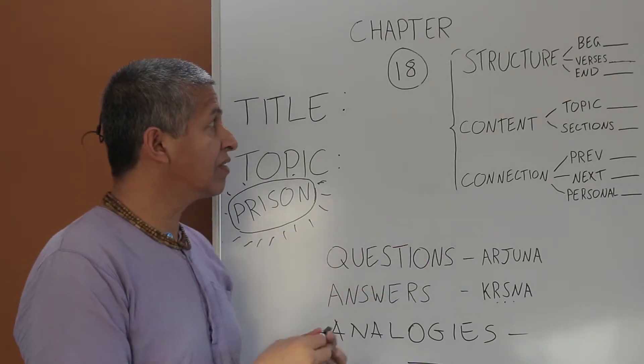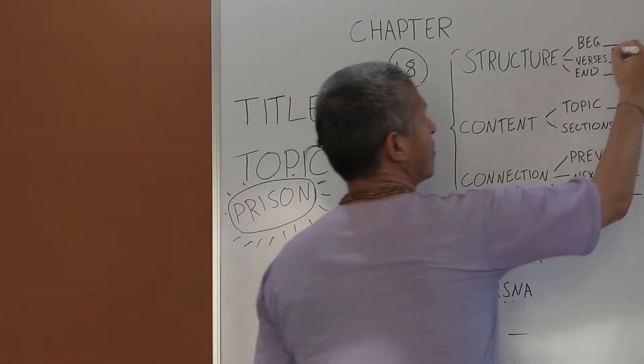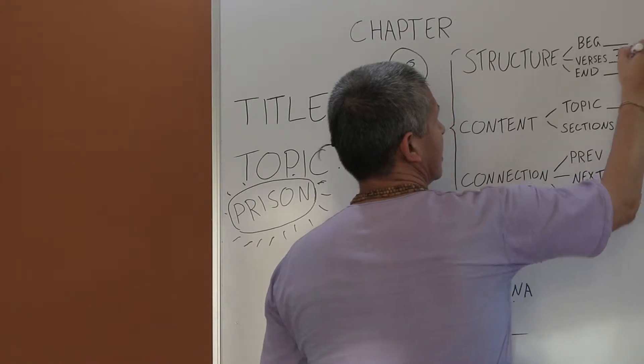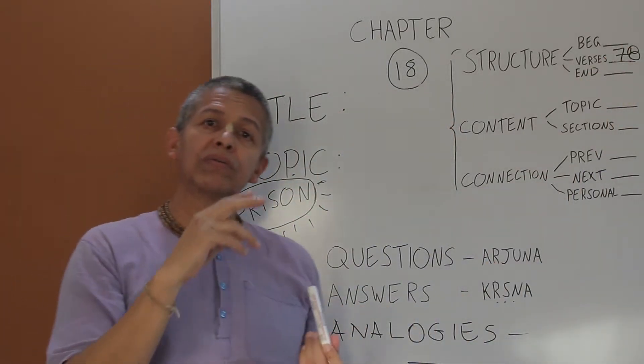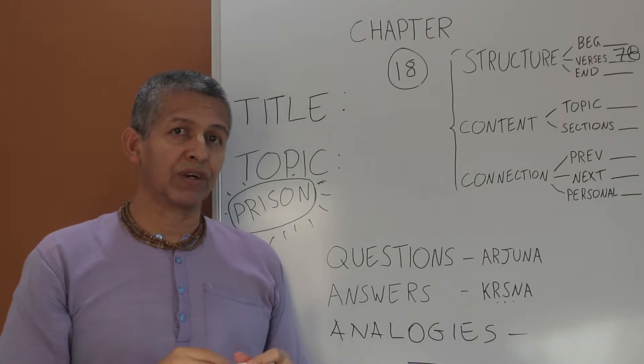Now, remember this is the longest chapter of the Bhagavad Gita, 78 verses. Chapter 2, the second longest, 72 verses.